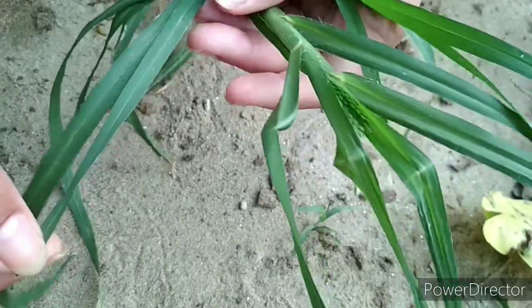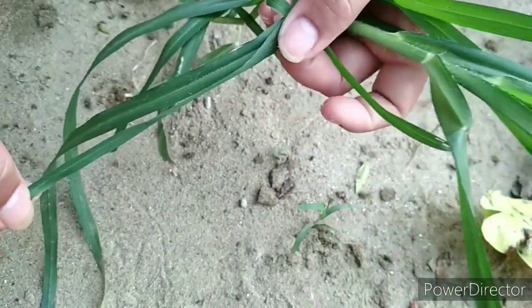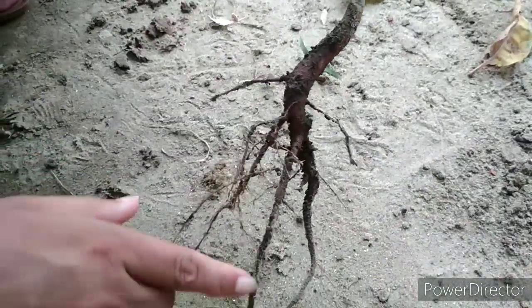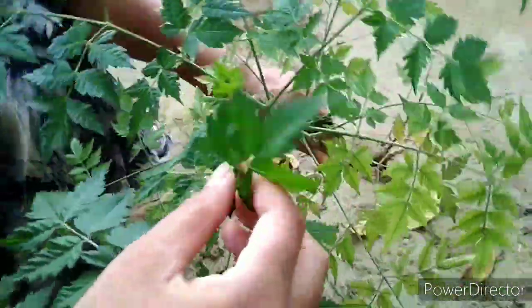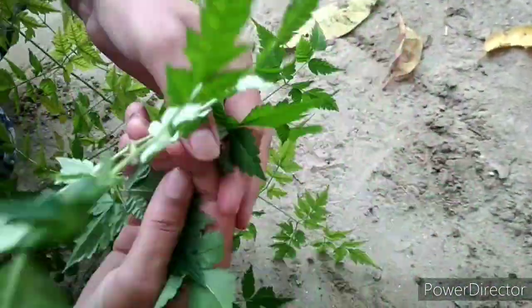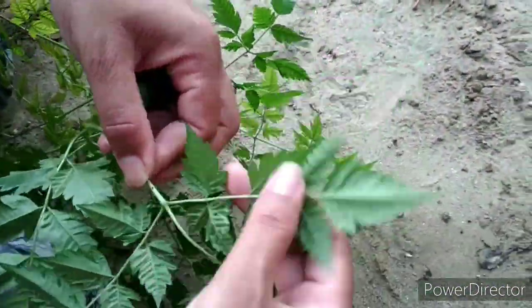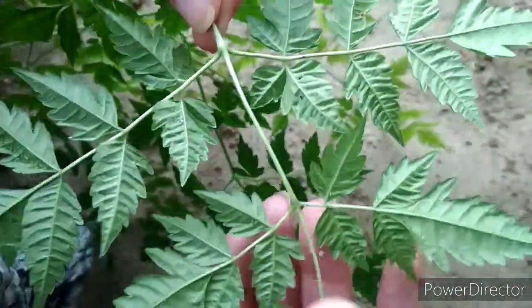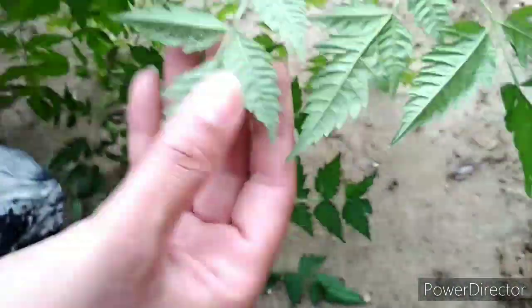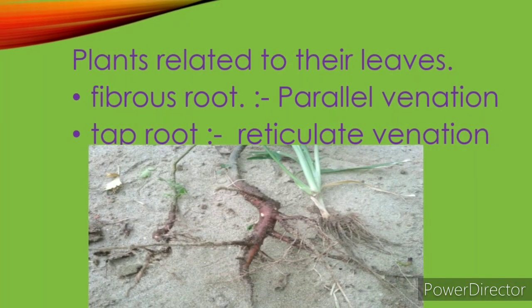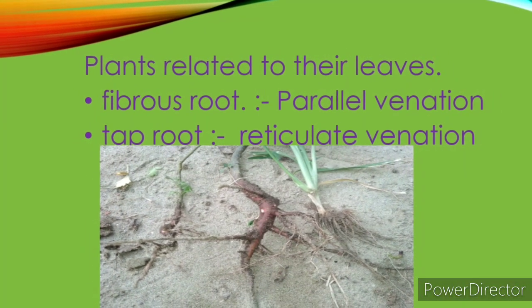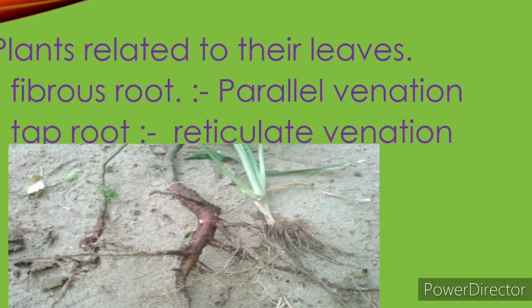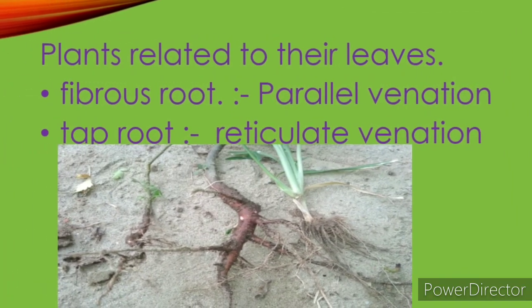The plant that has a tap root — their leaves have reticulate venation. This is the reticulate venation in leaves. For example, neem and mango have reticulate venation. Thank you, like and comment on my video.